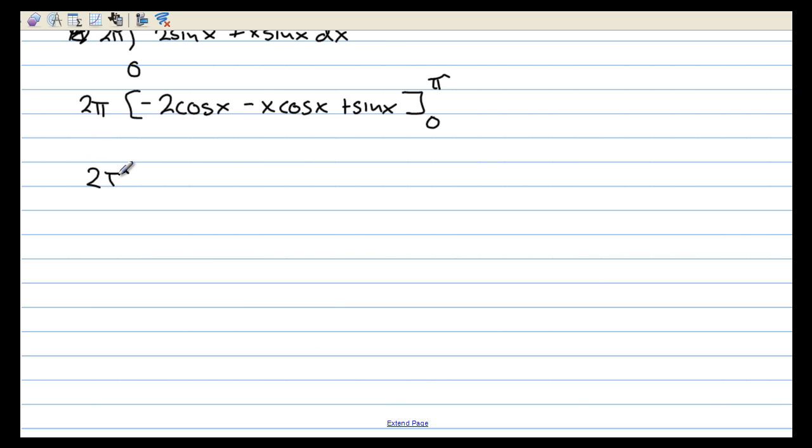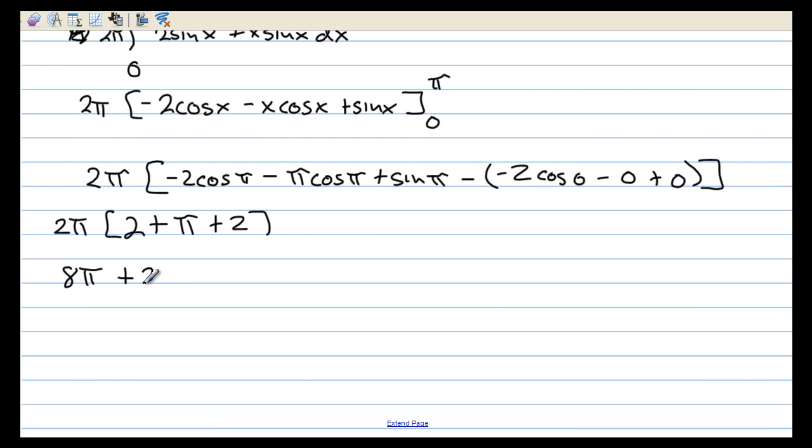We're going to have 2 pi times negative 2 cosine of pi minus pi cosine of pi plus sine of pi minus negative 2 cosine of 0, that's just going to be 0, and the sine of 0 is also 0. 2 pi times, the cosine of pi is negative 1, so that's 2. The cosine of pi is negative 1, so that's plus pi. The sine of pi is 0, and then we have plus, cosine of 0 is 1, so plus 2. So that's 8 pi plus 2 pi squared.